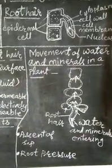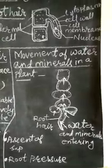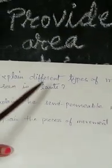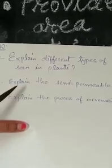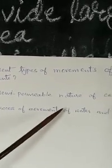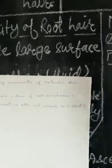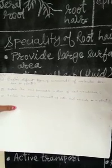Now today's homework. First question: Explain different types of movements of molecules seen in plants. Second question: Explain the semi-permeable nature of the cell membrane. Third question: Explain the process of movement of water and minerals in a plant. All these answers you will write down in your classwork notebook. Thank you.